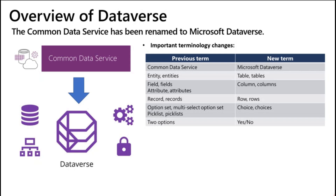Previously we also had different types of fields called option set, multi-select option set, pick list or pick lists — now all of these will be referred to as choice or choices. And what we used to know as two options in previous terminology will now be called yes or no fields. So this terminology change is pretty much straightforward.